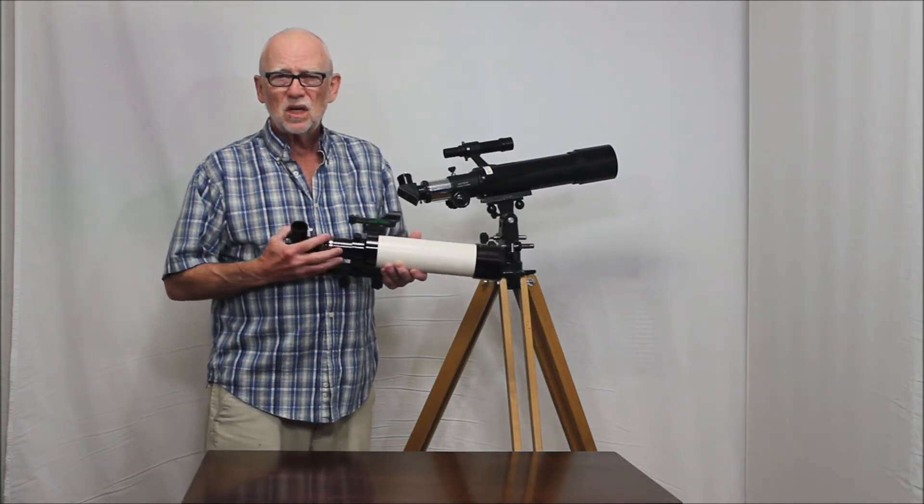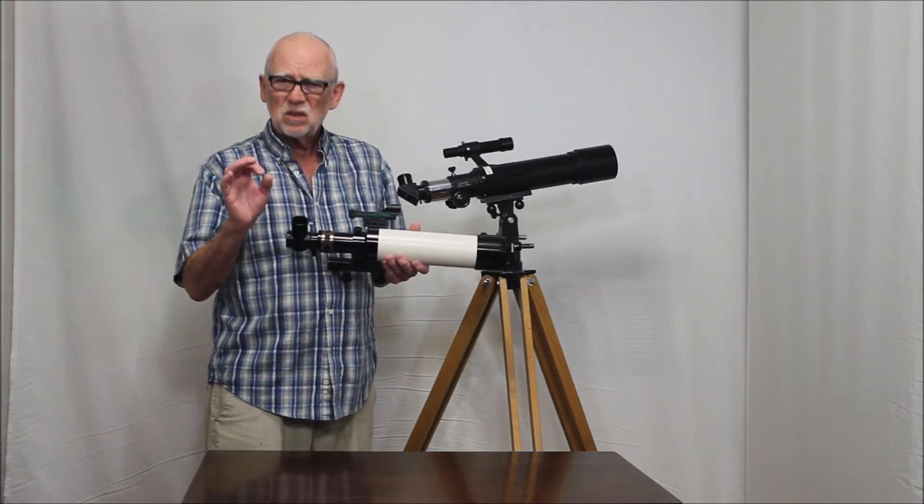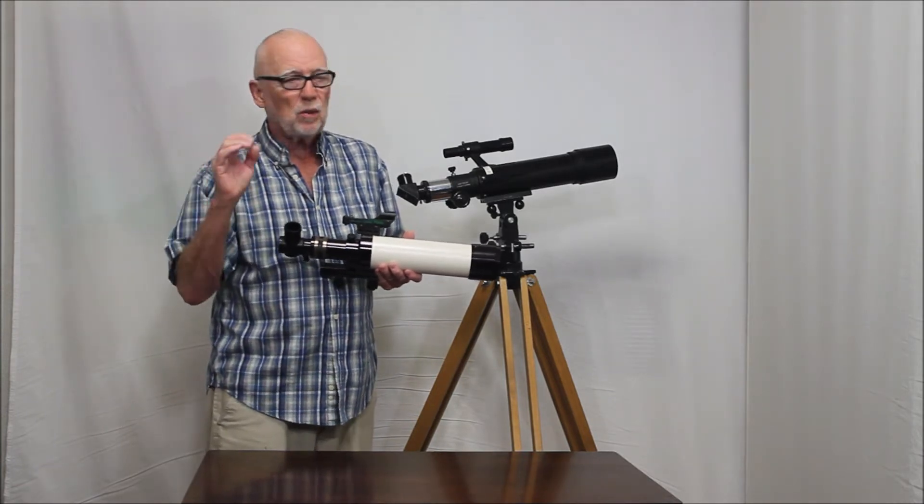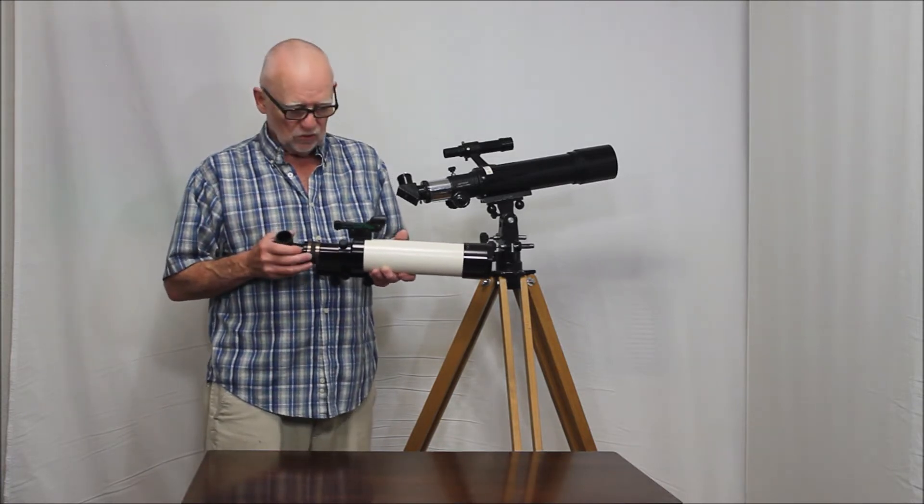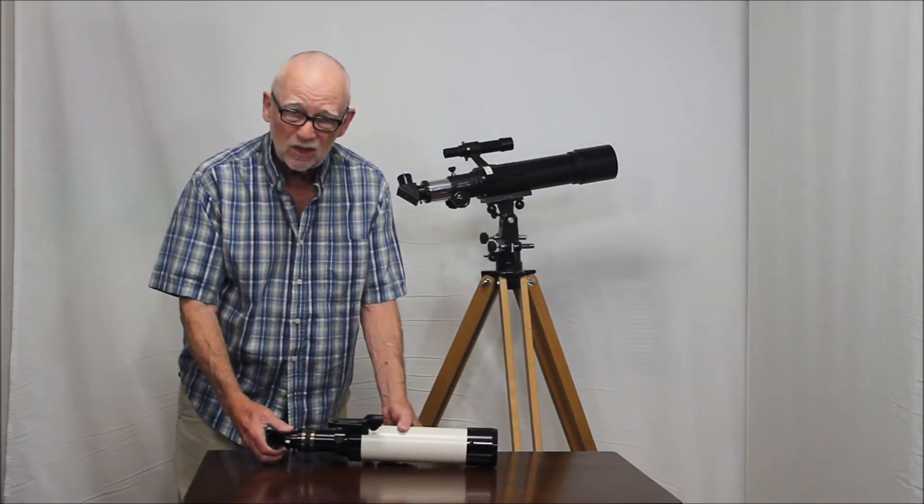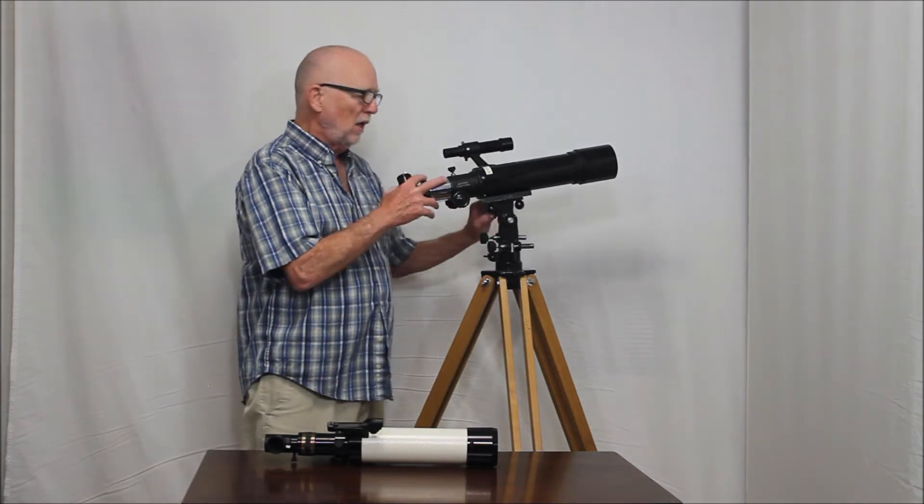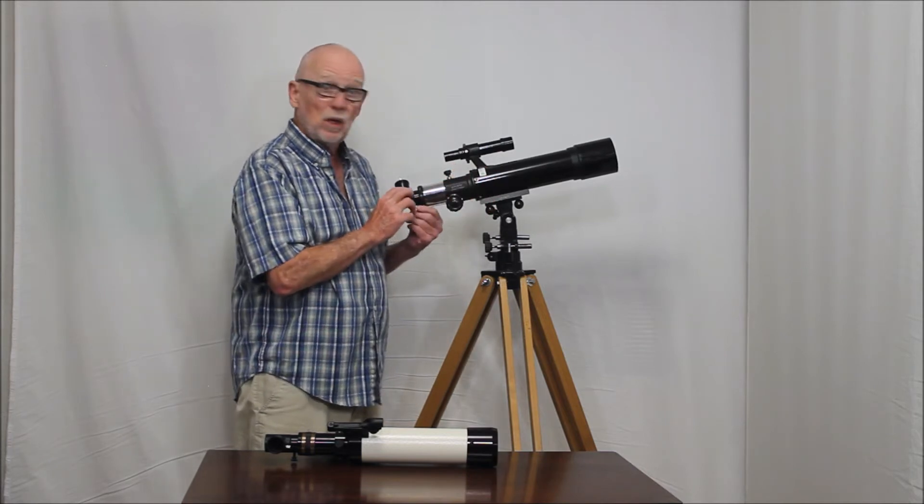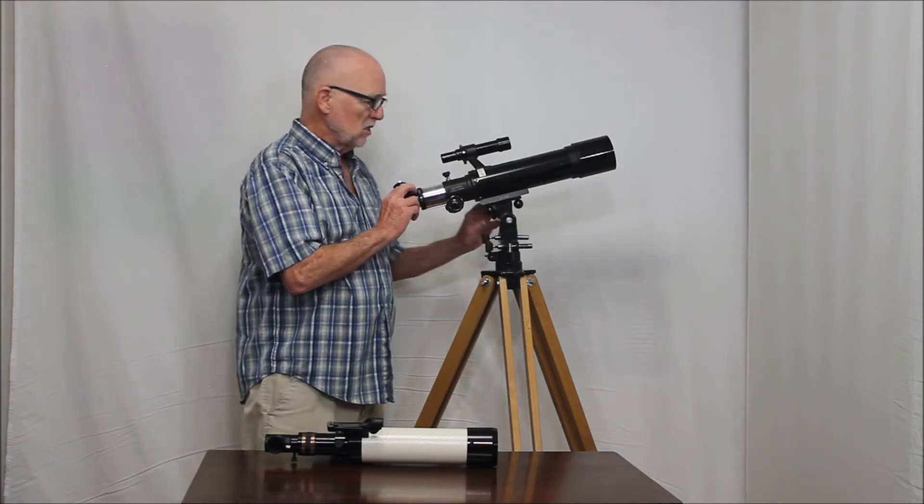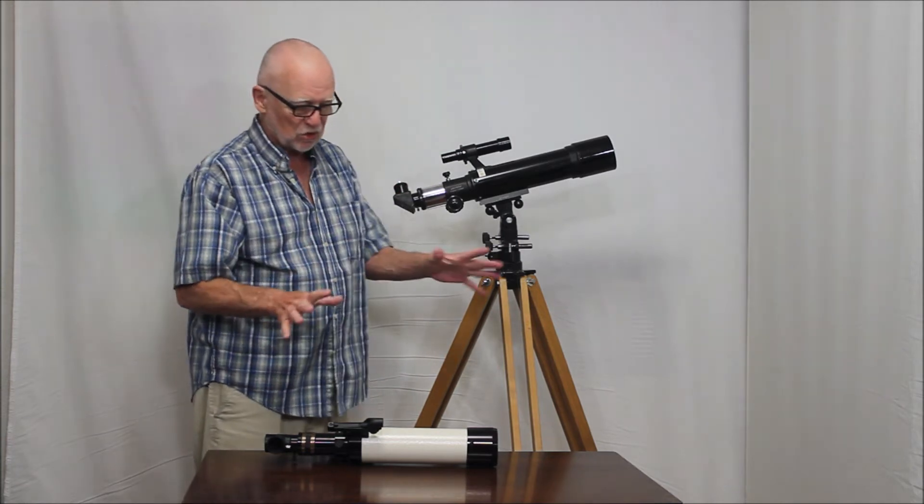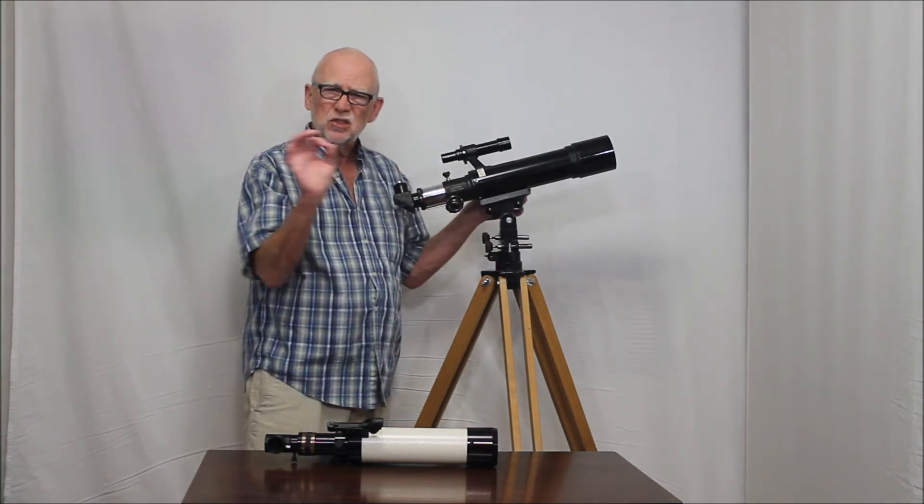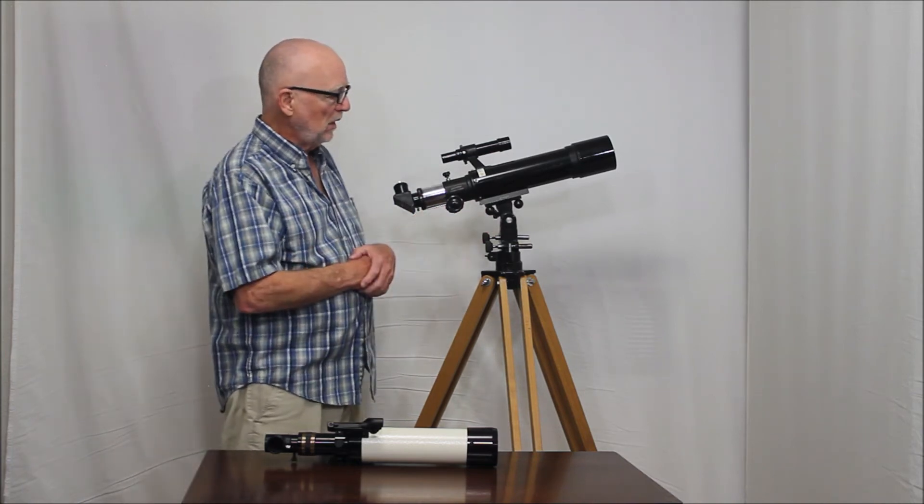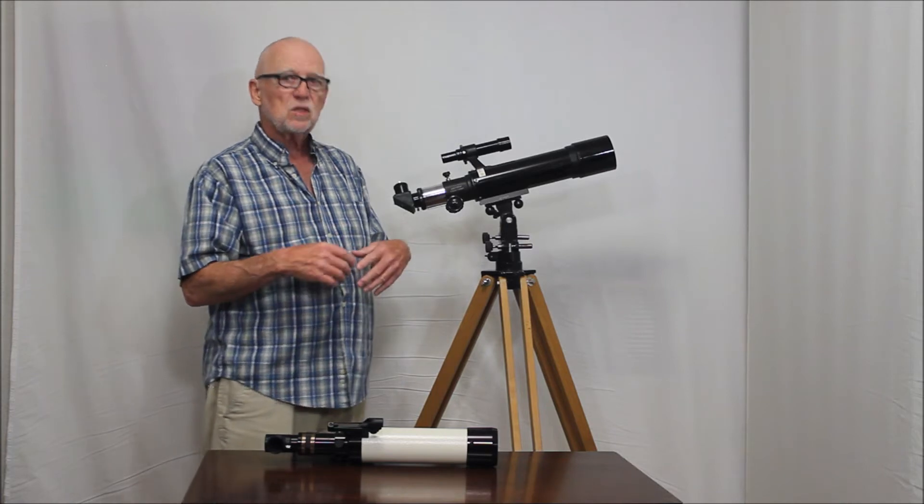When I was using this at 150 power looking at Saturn, yeah, there was a little color around there and stuff. But the detail was crisp and sharp and the little bit of color was not distracting. And just about the same can be said for this scope. The color was slightly different. There's a little bit more color in this scope, but not much. And as a matter of fact, I stopped this down to 70 millimeters just to do a fair comparison. And this one still had just a tiny bit more chromatic aberration. Not much, and not so much as to be objectionable.